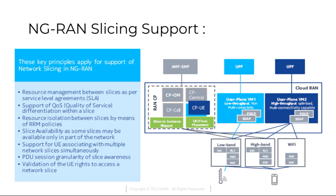It should be possible to fully dedicate NG-RAN resources to a certain slice. The key principles for 5G support of network slicing include: RRM between slices as per the agreement, support of Quality of Service, resource isolation between slices as per the policies, support for UE associated with multiple network slices simultaneously, and PDU session granularity.